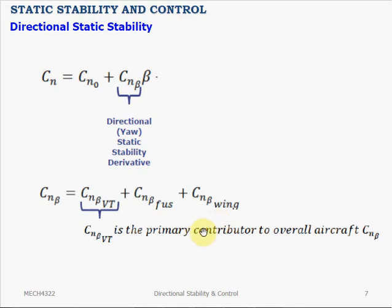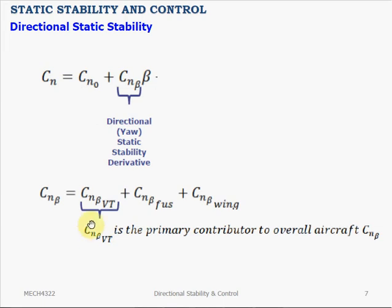The Cnβ contribution from the wing is destabilizing, as shown in the previous slide — its Cnβ has a negative sign. But the total Cnβ for the whole aircraft should be positive if the aircraft has positive static stability. This positive total Cnβ comes primarily from the vertical tail, which has a very large positive value. So the vertical tail is the primary contributor to overall aircraft directional stability.